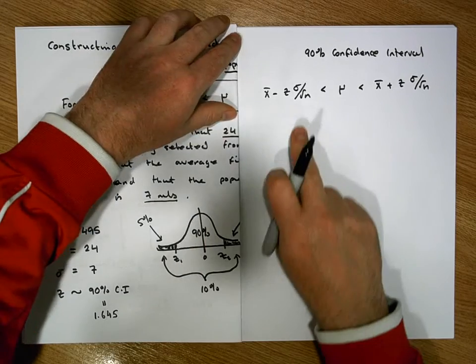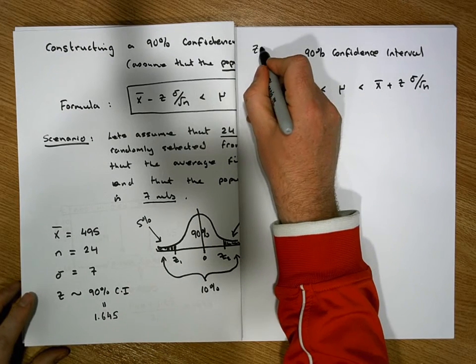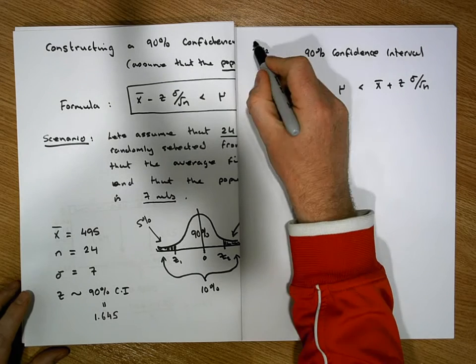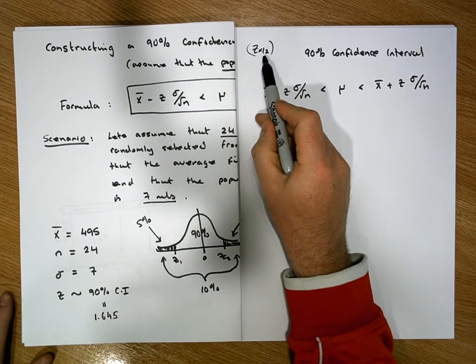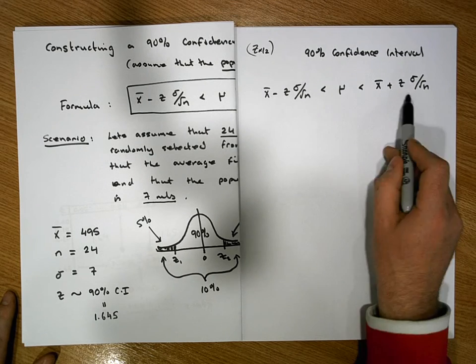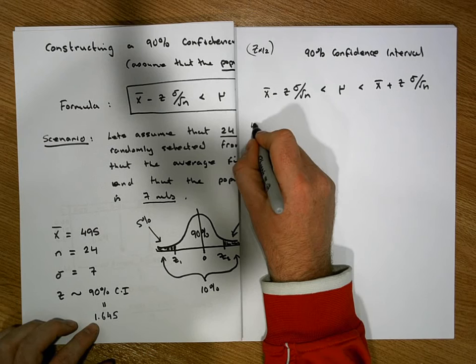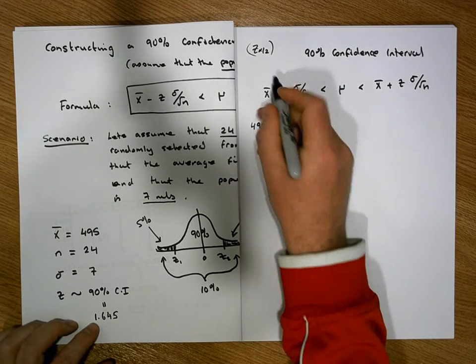Now, let's just keep in mind that this z here, I actually really mean z of alpha over 2, because we've actually done, it's half the confidence or half the significance has gone into the left and the right tail, but I'm not going to put that notation in here. But filling in our values, this becomes 495 minus,